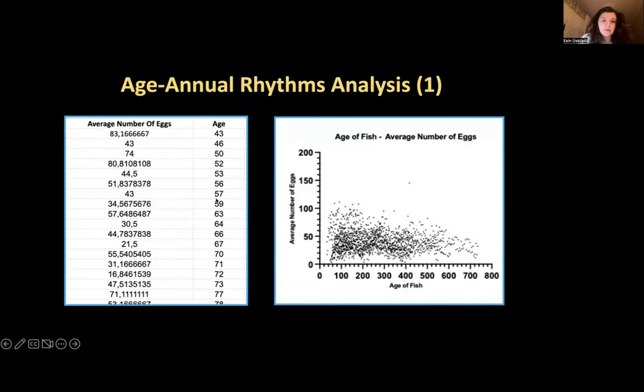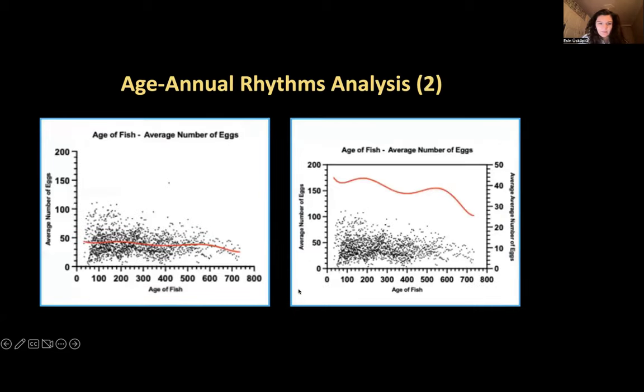First I have analyzed the age and annual rhythms data. I began by creating this graph using Prism and all of the data points corresponding to the table on the left. This is a very long table but there's only one section of it. The ages of the fish and the average number of eggs that the fish of this age produce are written here and those data points are thus created.